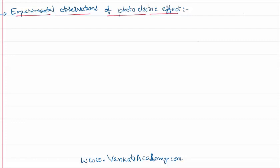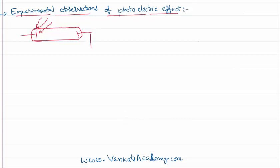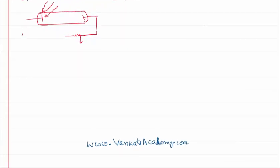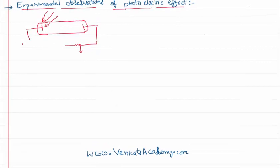Some basic observations were made based on an experiment called Leonard's experiment. The experimental setup looks something like a tube. A metal surface acts as a cathode, on which light of a certain frequency is incident. There is also an anode connected to a rheostat, which is further connected to a variable voltage source and a key to control the situation.